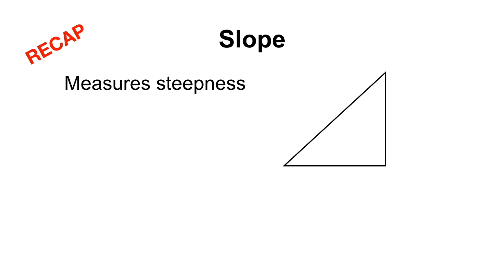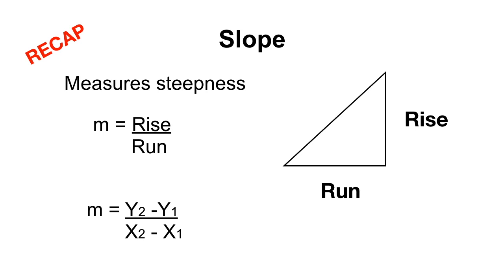The slope is going to tell you how steep a line is or a hill, for example. What it's looking at is sometimes known as the rise over the run - how far it goes up versus how far it goes horizontally. Mathematically this is expressed as y2 minus y1 divided by x2 minus x1.